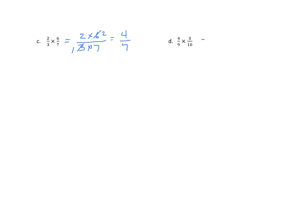One last example. We can do some simplification. Three and nine are both divisible by three. And four and ten are both divisible by two. I get two times one is two. Three times five is fifteen. So four-ninths times three-tenths is two-fifteenths.